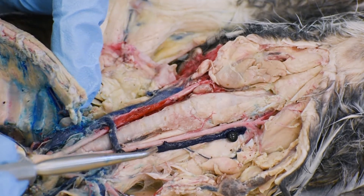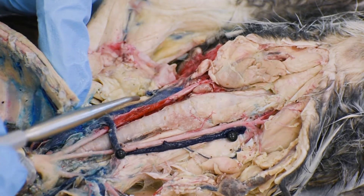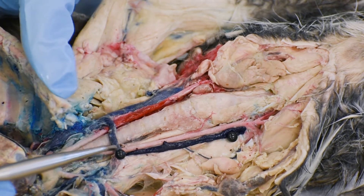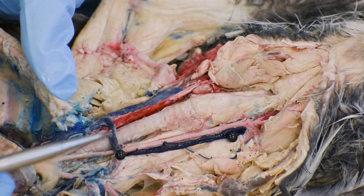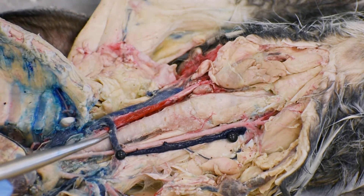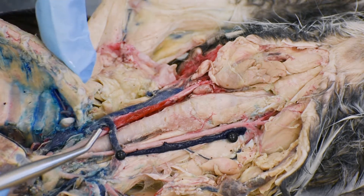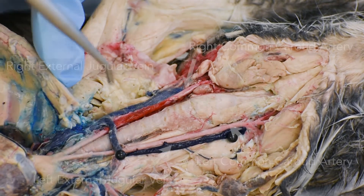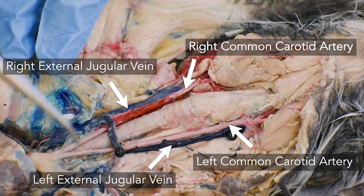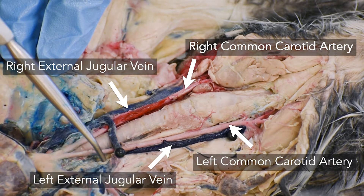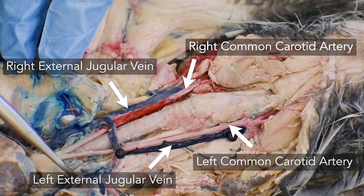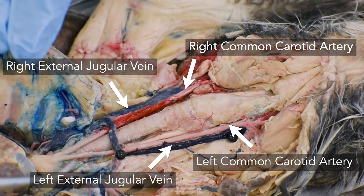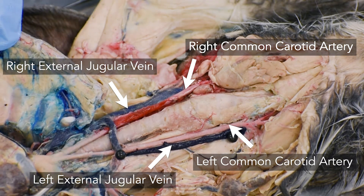The left external jugular and the right external jugular have a connection in between — this is called the transverse jugular vein, which is present in the rabbit but not in the human. These jugulars will then merge with the superior vena cava on their respective sides.